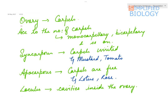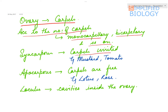The ovary is part of the carpels. According to the number of carpels, they are referred to as monocarpillary (single carpel), bicarpillary (two carpels), tricarpillary, and so on. When the carpels are united, it is referred to as syncarpous — examples include mustard and tomato. When the carpels are free, it is referred to as apocarpous — examples include lotus and rose.